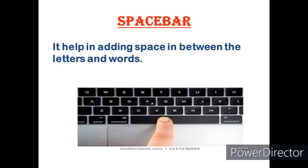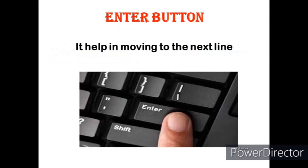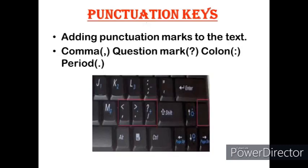Next is the Spacebar. The Spacebar is used to add space between letters or words. Next is the Enter button — if you want to move to the next line, you press the Enter button. Next is the Punctuation key, which is used for adding punctuation marks such as comma, question mark, colon, and period. These types of keys are called punctuation keys.